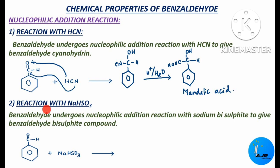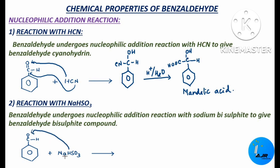The next reaction is the reaction with sodium bisulphite. Benzaldehyde undergoes nucleophilic addition reaction with sodium bisulphite to give sodium benzaldehyde bisulphite compound. Here, this hydrogen gets added up to this O and the rest of the part, that is NaSO3, gets added up to this carbon.